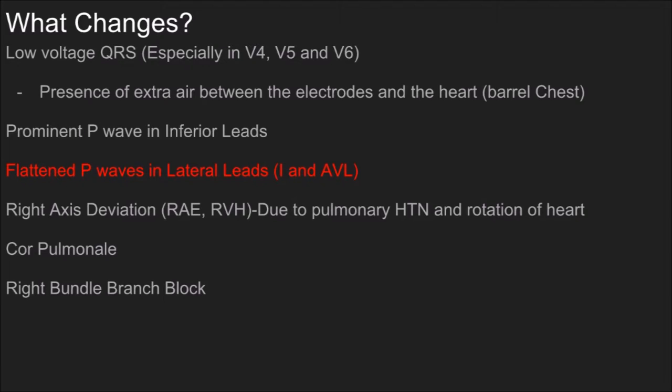We can also see the manifestations of cor pulmonale, which is a result of the right side of the heart being overloaded, usually due to pulmonary hypertension — one of the things that comes with conditions that can bring on COPD as well as the disease itself. Sometimes we can also see it manifest with a right bundle branch block.